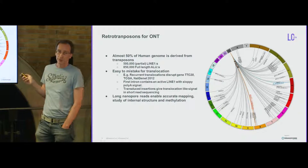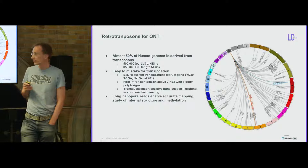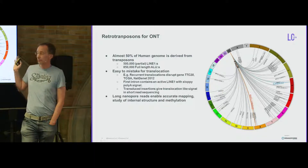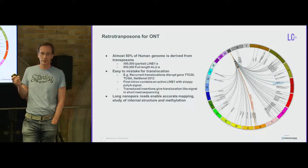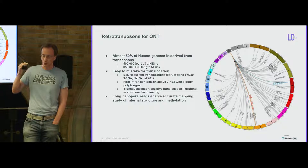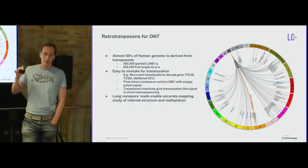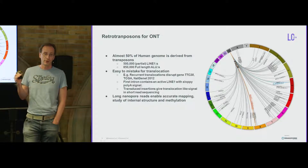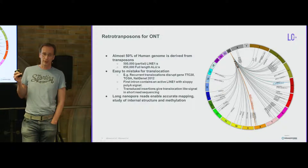The difficulty with short reads and LINE-1s or transposable elements overall is that there are a lot of retrotransposons and they are very repetitive. Some estimates say 50% of the human genome is derived from transposons — though that's a somewhat fishy estimate because many are highly mutated. Still, there are hundreds or thousands of near-perfect copies of LINE-1s, and definitely thousands for ALUs, and those are very difficult to map.